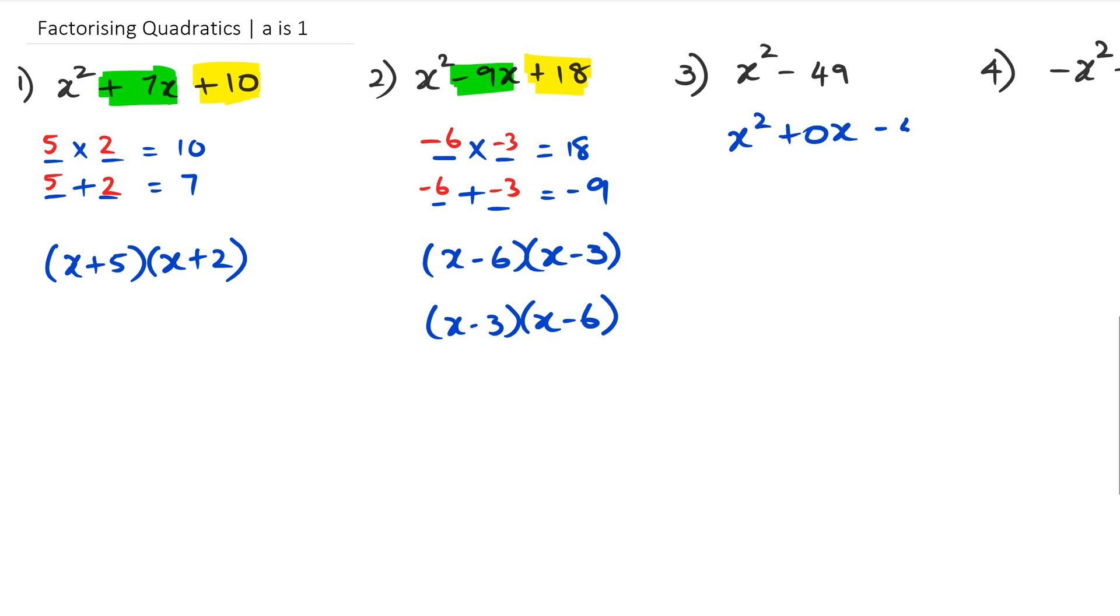The long way of looking at it is that we can rewrite this as x² + 0x - 49. So we're looking for two numbers that multiply to negative 49 and two numbers that add up to zero.